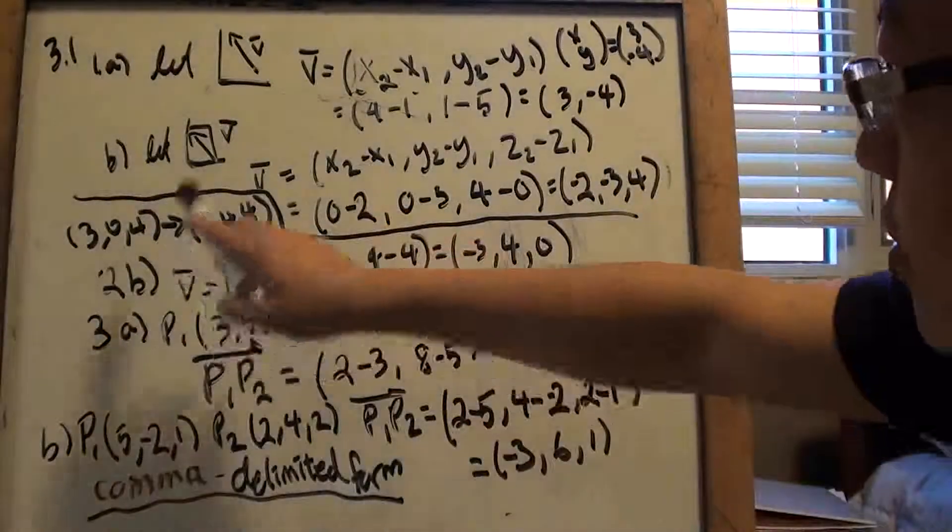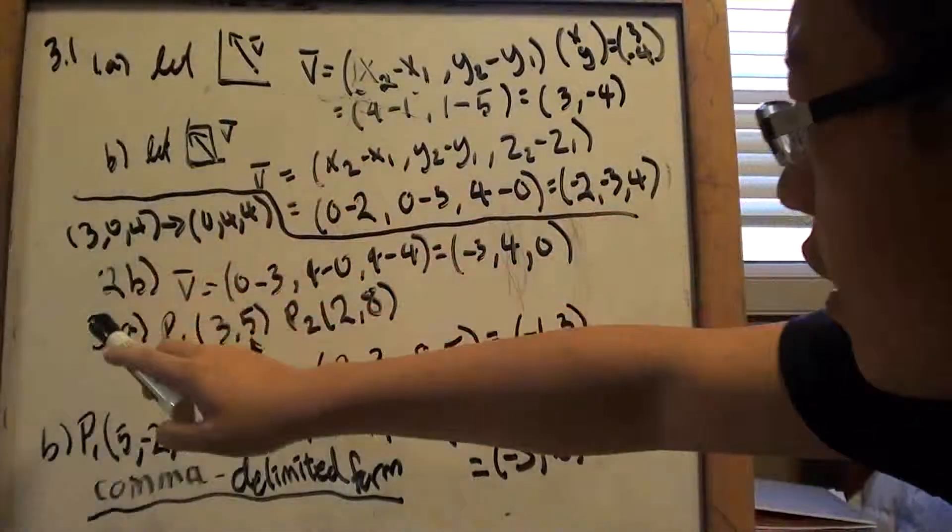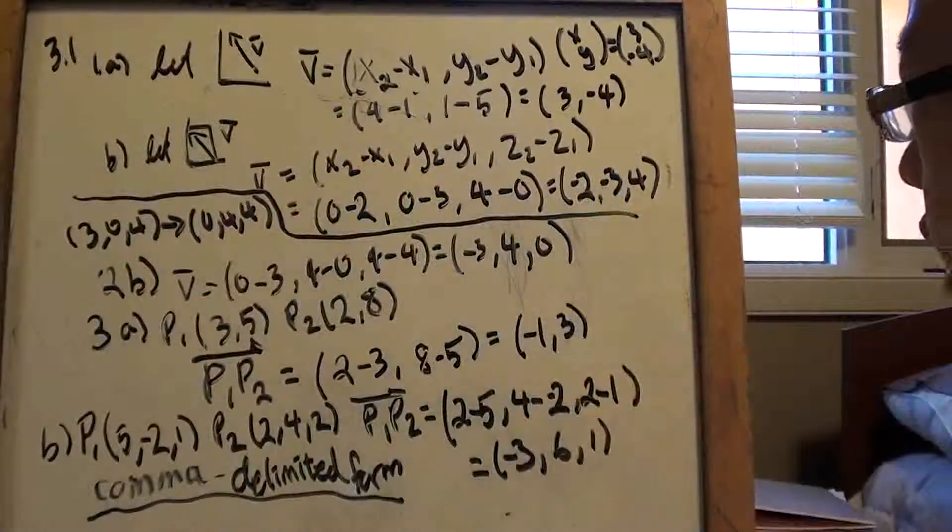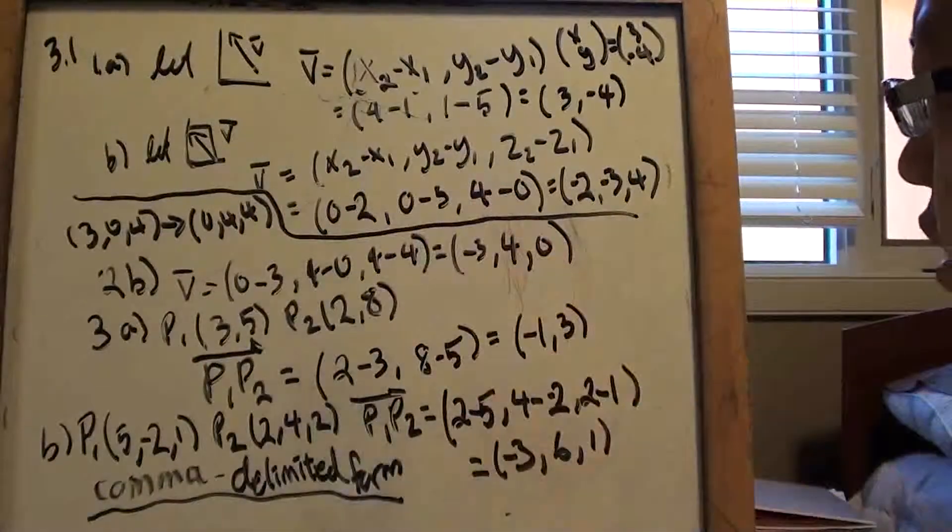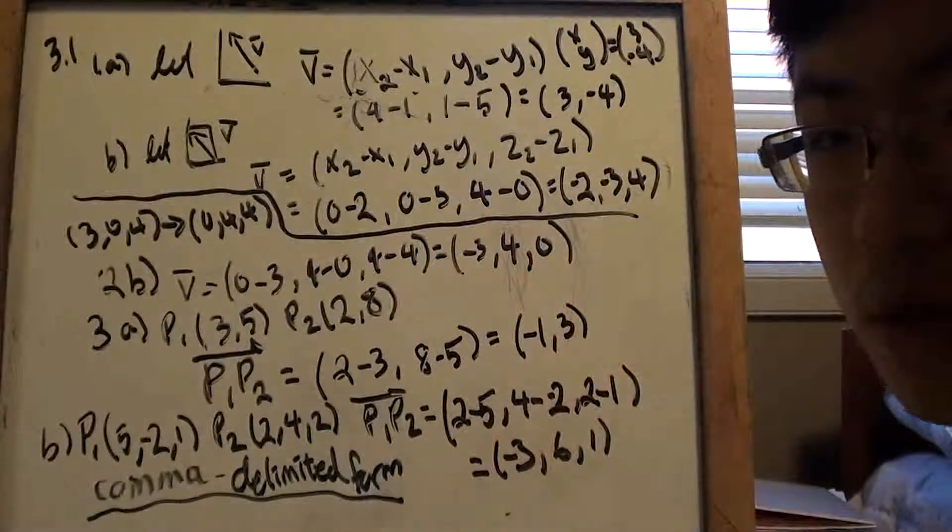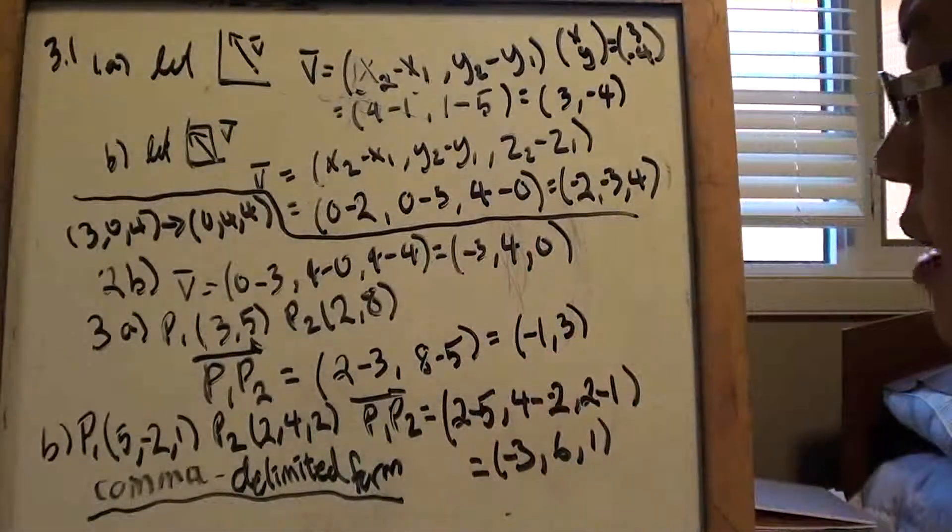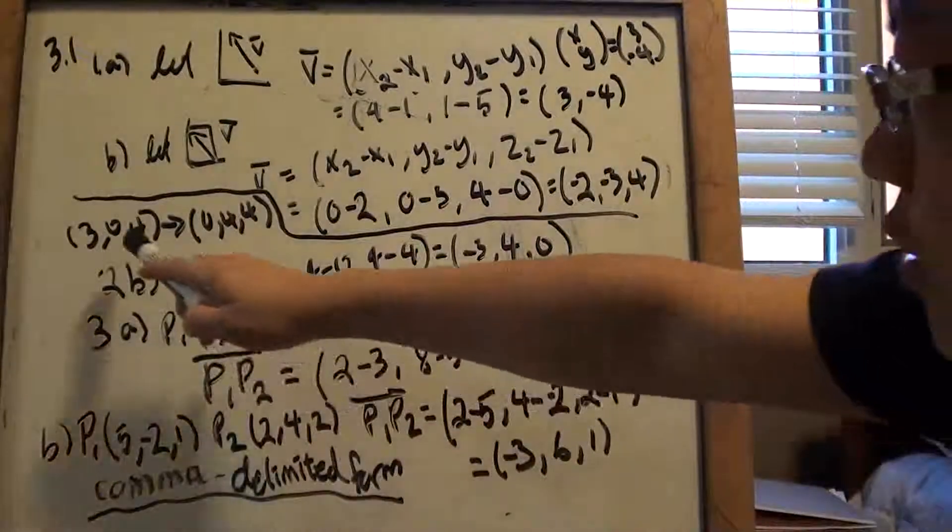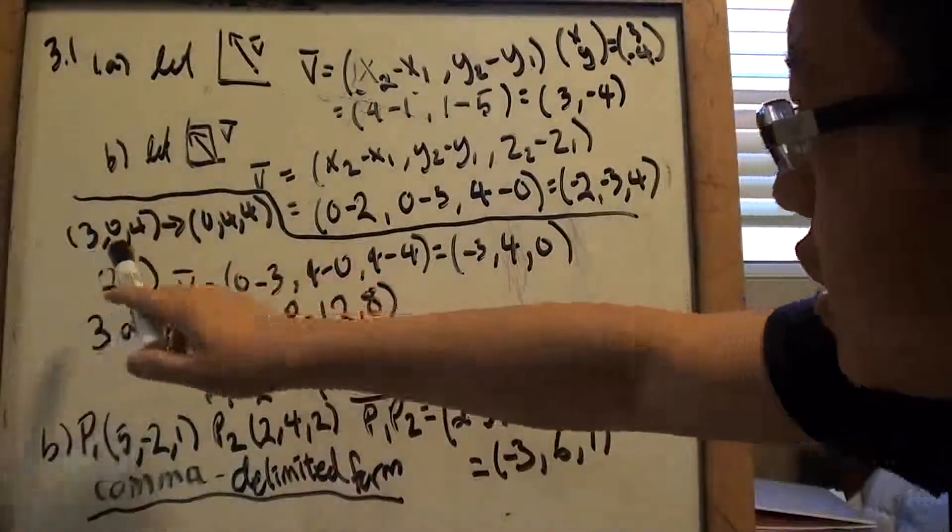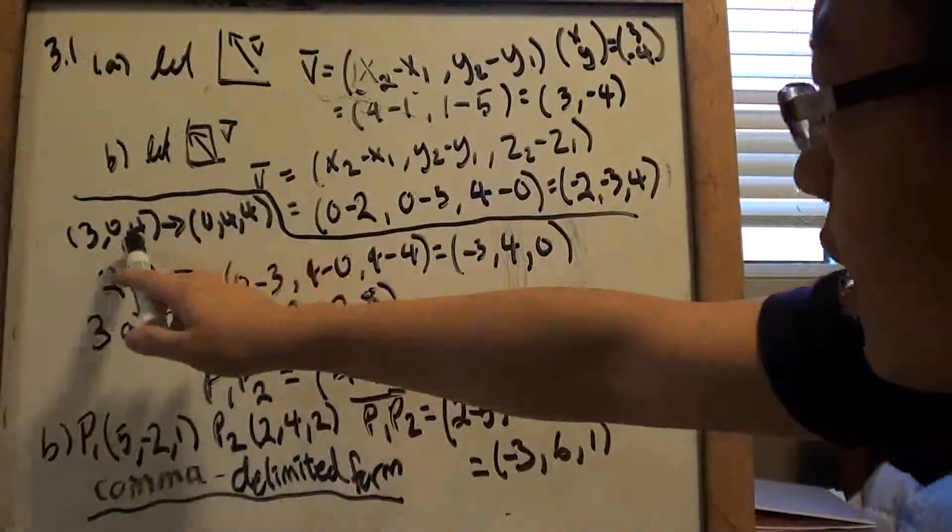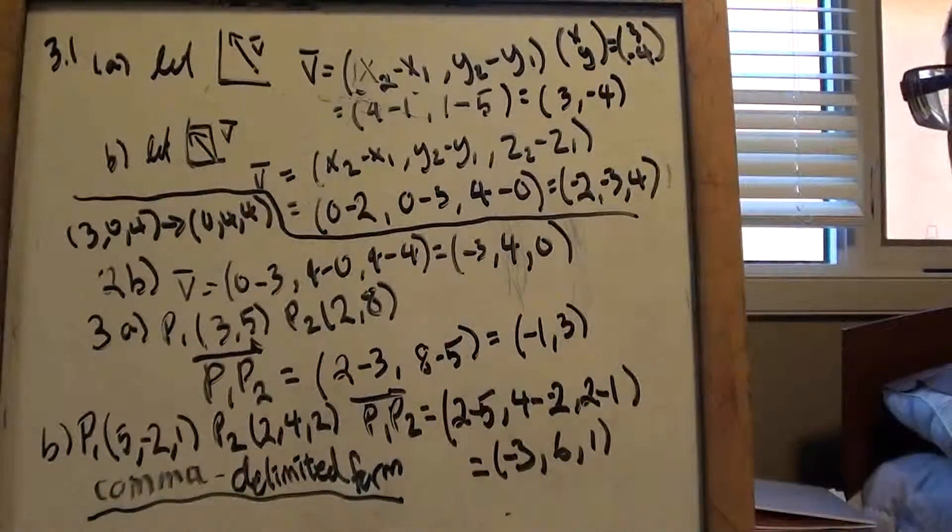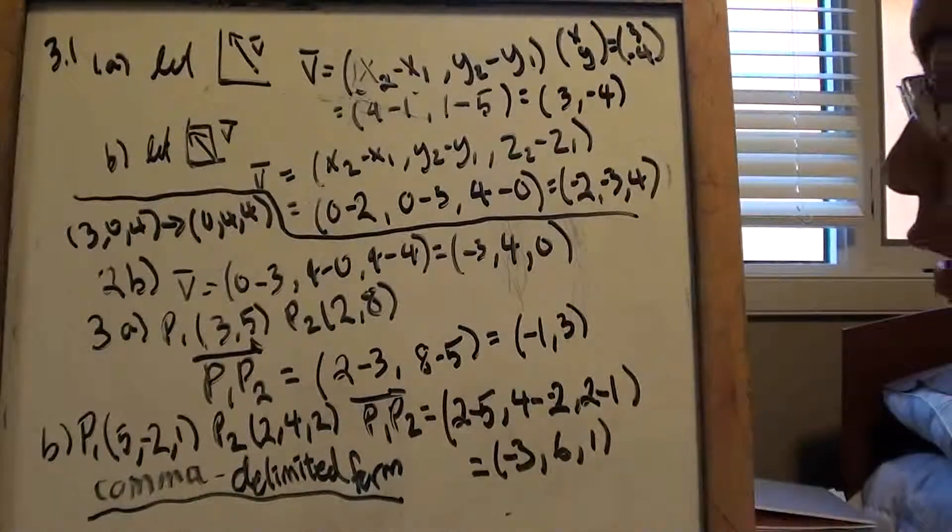And then you get that. So not too difficult. X2, remember, X2 and X1 are different points. Final, initial, final, initial. So make sure you subtract accordingly. But again, not rocket science. B, similar idea. The only difference is now this is 3D. But again, it sounds intimidating, but all it just means it has one more dimension. So I just did exactly the same thing. Not a huge deal.